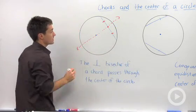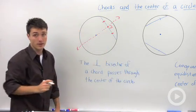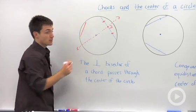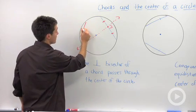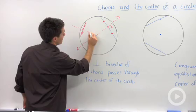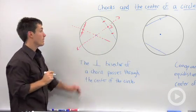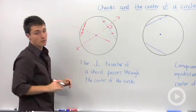So this dotted line is my perpendicular bisector of that chord. And no matter where I draw a chord on this circle, if I find its perpendicular bisector, it will always pass through the center of the circle. So that's the first key thing about a chord and its relationship with the center of a circle.